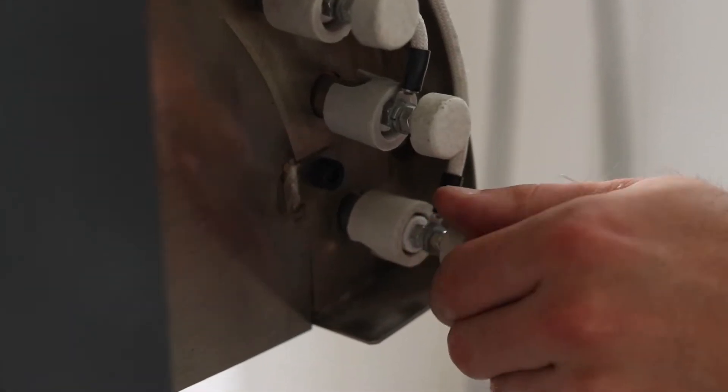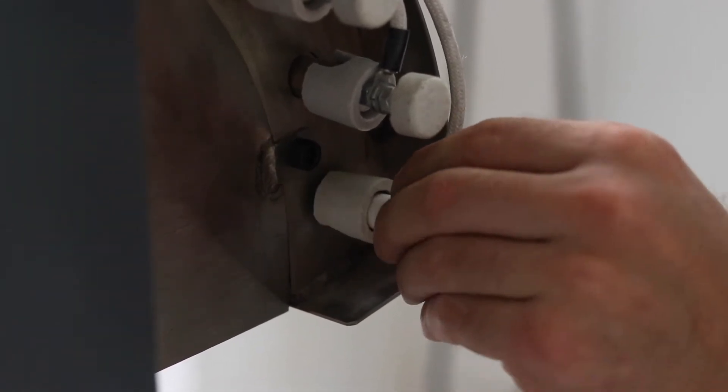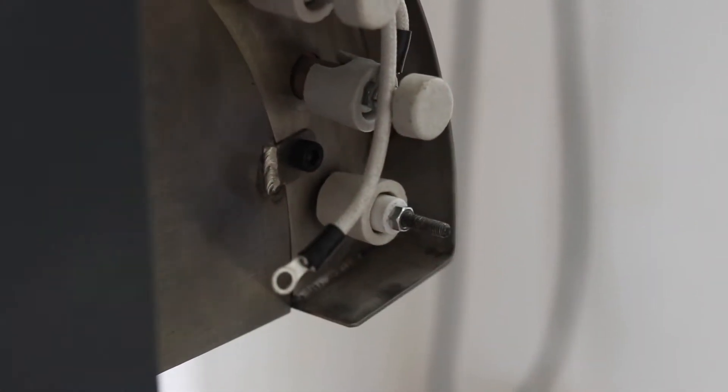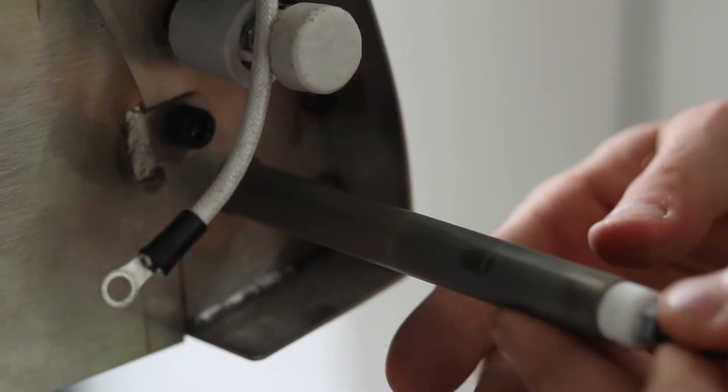So to start, take off the cap, the nut, the three washers, and the electric connector on both sides of the heating element. Now you can pull out the heating element.